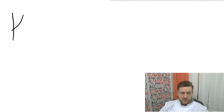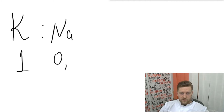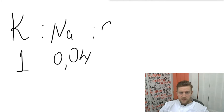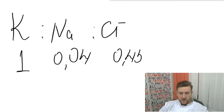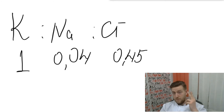The permeability of the membrane to different ions is not equal. If we take permeability to potassium as 1, then permeability to sodium is 0.04 — meaning the membrane is 25 times less permeable to sodium than to potassium. The permeability to chlorine is around 0.45.